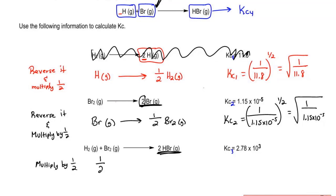So this is going to become half H2 gas plus half Br2 gas gives me HBr. Since I multiplied by a half, this is to the half power. Half power is the same thing as square root.